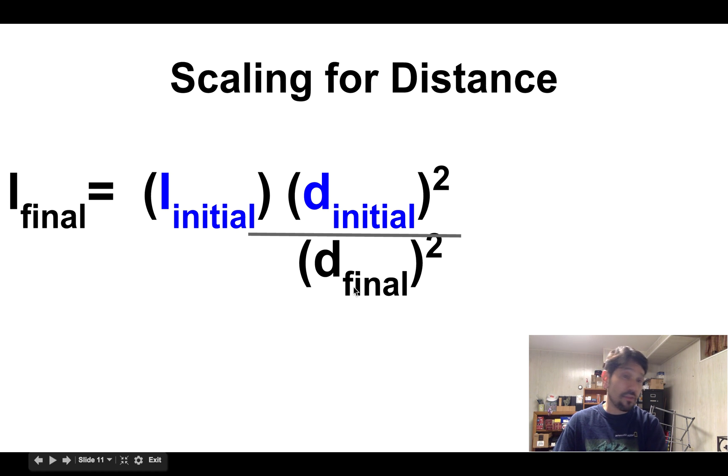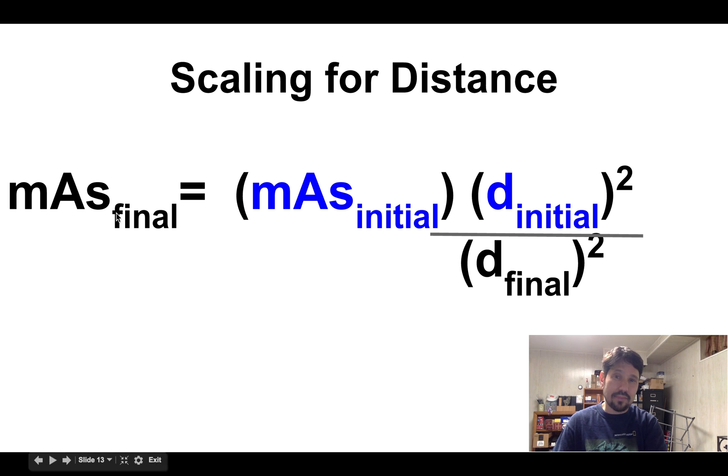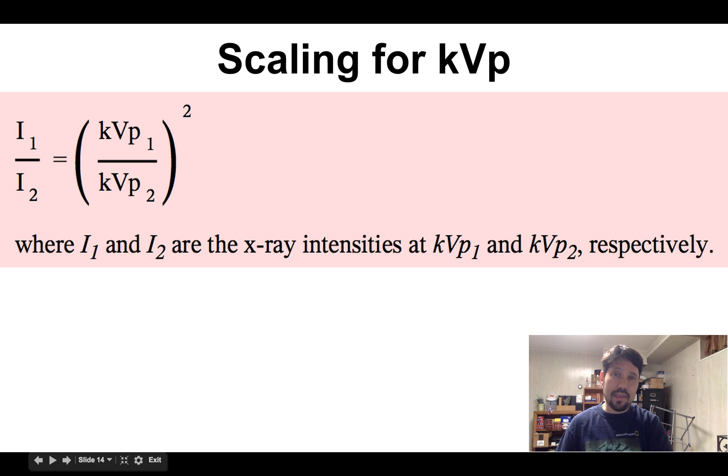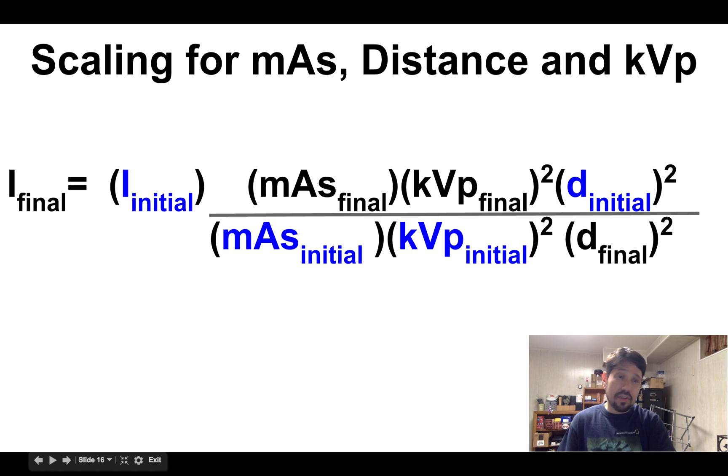Now I have initial over final. You can do it for mAs versus distance also. My new mAs, my final mAs equals my initial mAs times the ratio of the inverse distances squared. And you can do for kVp as well, I₁ over I₂ equals kVp₁ over kVp₂ squared. I could memorize this formula, but I find I'm always looking for what's the final intensity given the initial intensity and given the initial kVp level and the final kVp. And if you're given a problem that makes you scale for all three—distance, kVp, and mAs—you can do it all at once, or you can do it in three separate problems.